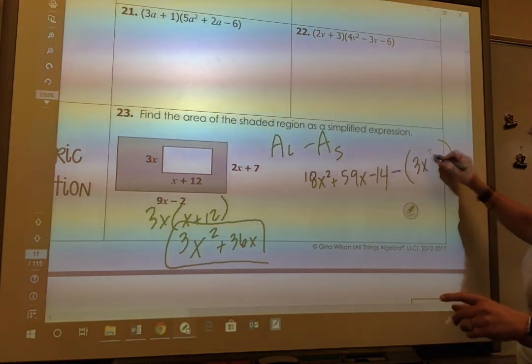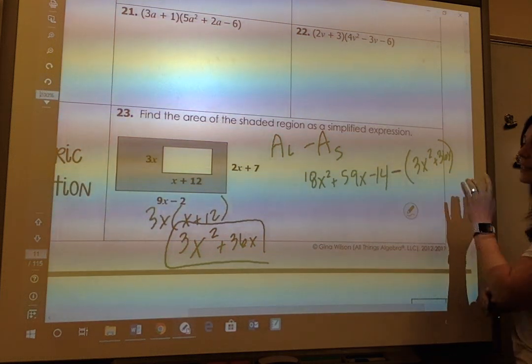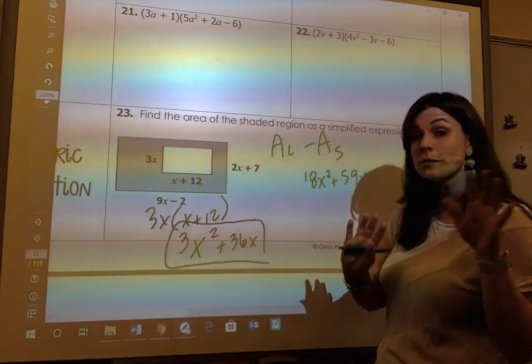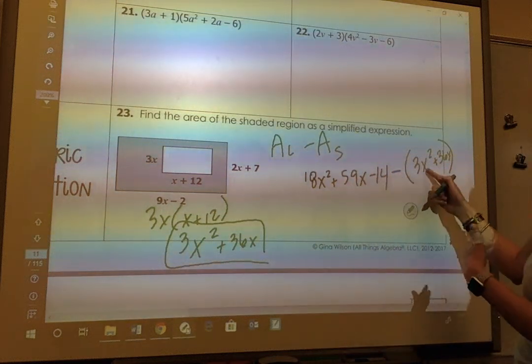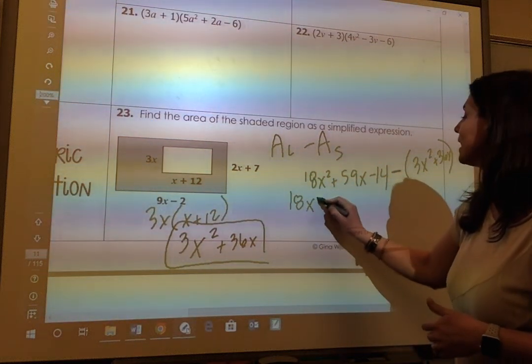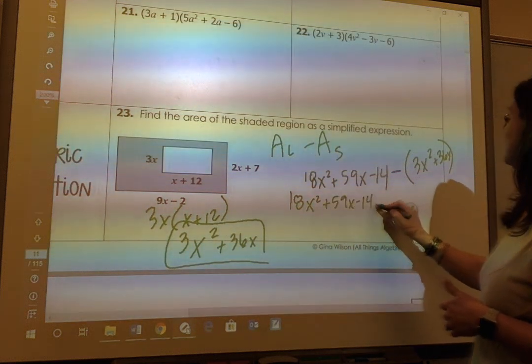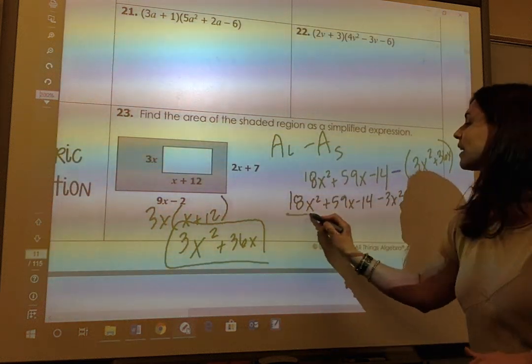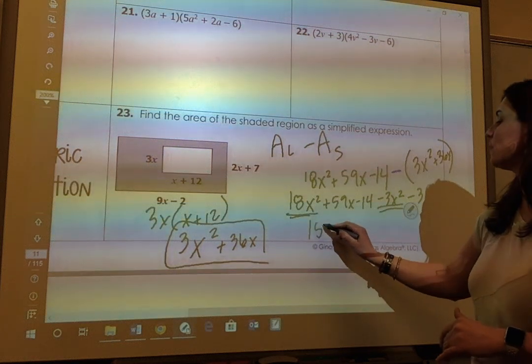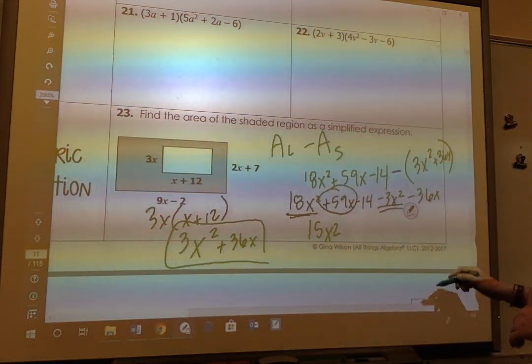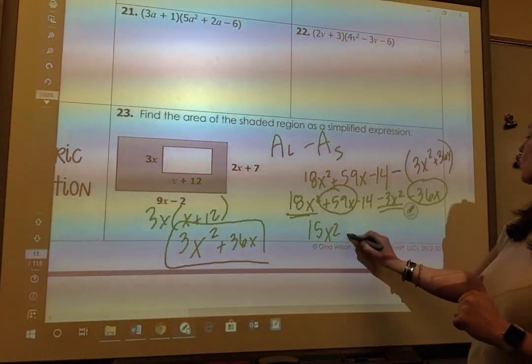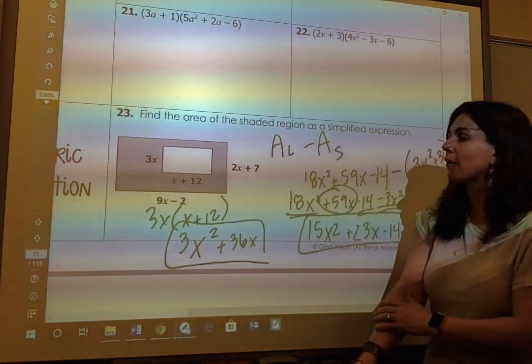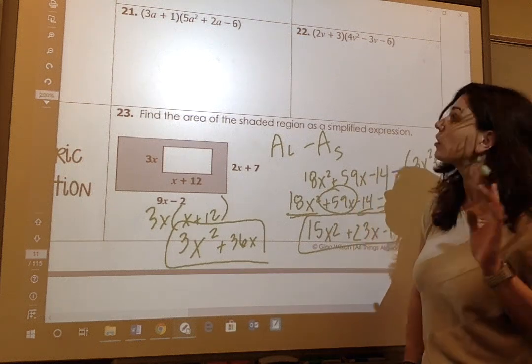Area of my large minus the area of my small. Don't forget this is a polynomial. So I've got to put this in parentheses because you've got to distribute that negative. And that's where students tend to go wrong. They just want to combine at this point. But you can't because you're subtracting. So when I rewrite this using the distributive property, I get 18x squared plus 59x minus 14 minus 3x squared minus 36x. And now when I combine terms, I get 15x squared, negative 3x squared is 15x squared. I have a positive 29x and a negative 36x, which is a positive 23x. And then my constant term is a negative 14. So this would be the area of the shaded region.